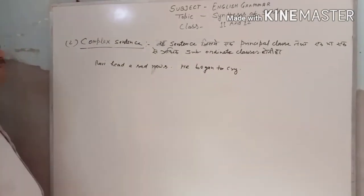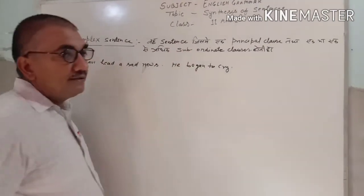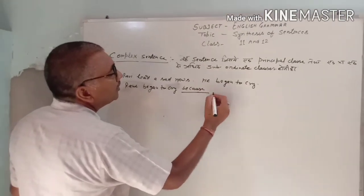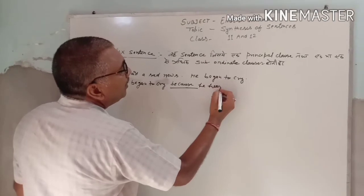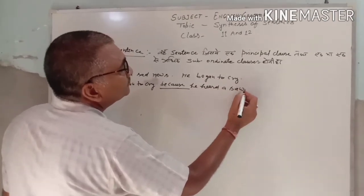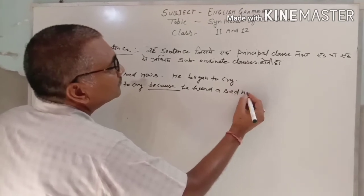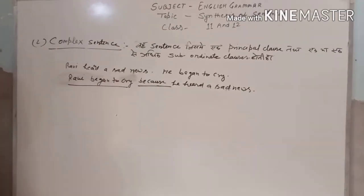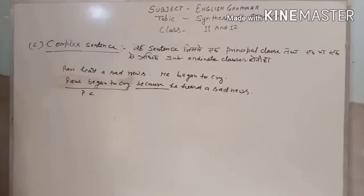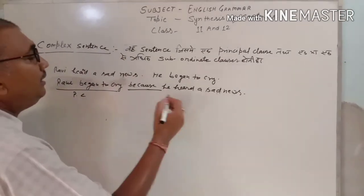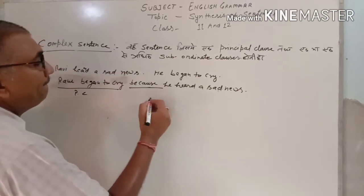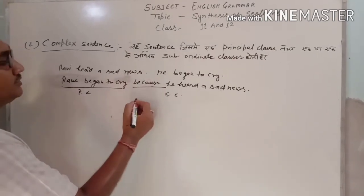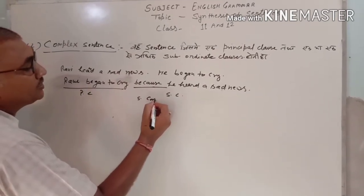So what are the two simple sentences here? 'He heard a sad news' and 'He began to cry.' To make a complex sentence, we use a subordinating conjunction. For example: 'Because he heard a sad news' — this is our subordinate clause, joined with a subordinating conjunction.